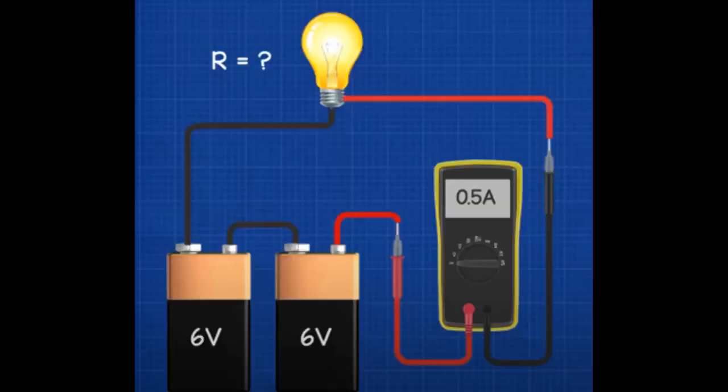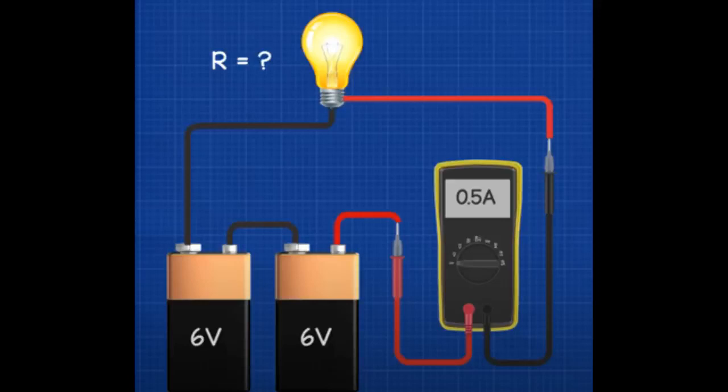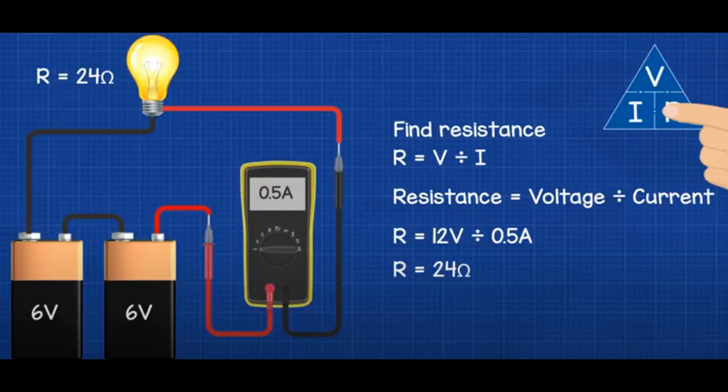Now, let's look at how to find resistance. Say that we have a resistive lamp powered by a 12-volt power supply. We don't know how much resistance is in the circuit, but we do know that the current is 0.5 amps. To calculate the resistance, we first write R and then cover up the R in the triangle. With only V and I left, resistance equals voltage divided by current. The voltage is 12 volts and the current is 0.5 amps, so 12 divided by 0.5 gives us 24 ohms of resistance.